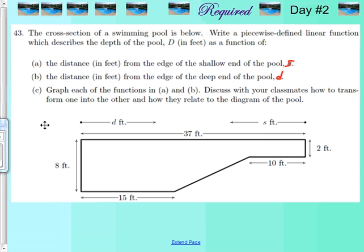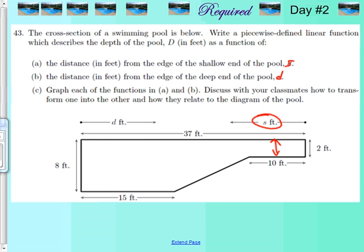In this cross-section of a swimming pool — to clarify for people following along at home, we already switched the d and the s. This is supposed to be the shallow end of the pool and this is the deep end of the pool, because it's deeper — at least deep enough to drown most people that aren't eight feet tall.